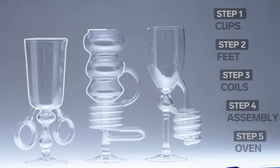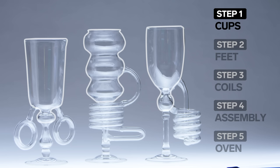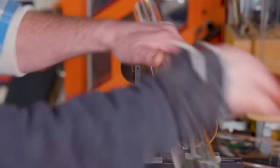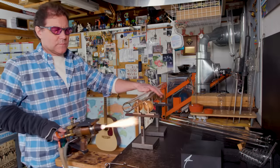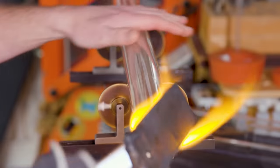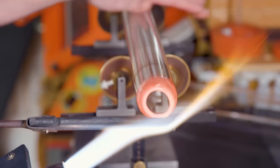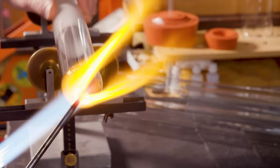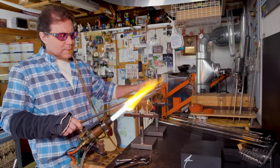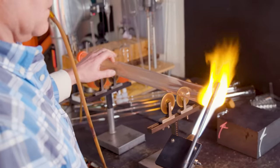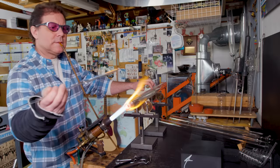First, I'm going to start by making the cups. I start with a piece of 44 millimeter tubing. I heat up a section. I close the end off. I punty up.